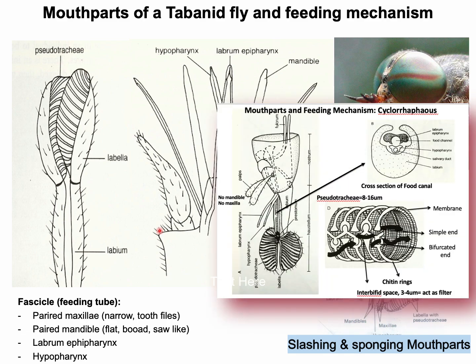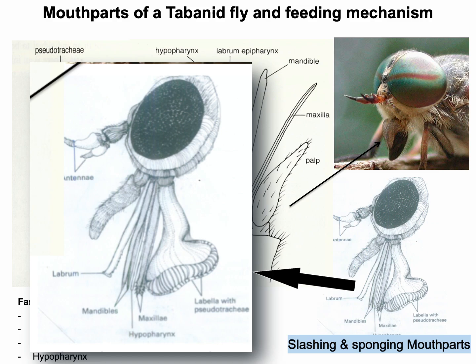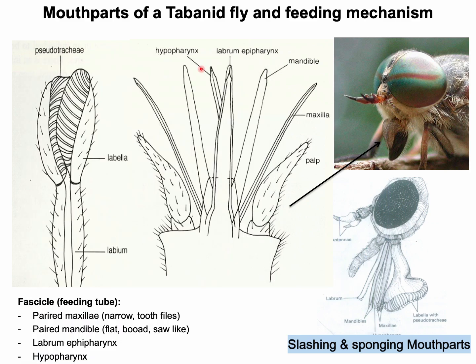The mouth parts of Nematoceran flies are piercing and sucking type, whereas members of Cyclorrhapha possess sponging or lapping type mouth parts — meaning Cyclorrhapha cannot pierce the host's skin and can only absorb ready-made fluid or blood. The mouth parts of Tabanid flies combine the blood-sucking mouth part of Nematocera with the lapping or sponging mouth part of Cyclorrhapha. The paired maxillae are narrow and the paired mandibles are broad, forming a fascicle by combining the stout labrum and narrow hypopharynx with maxillae and mandibles.